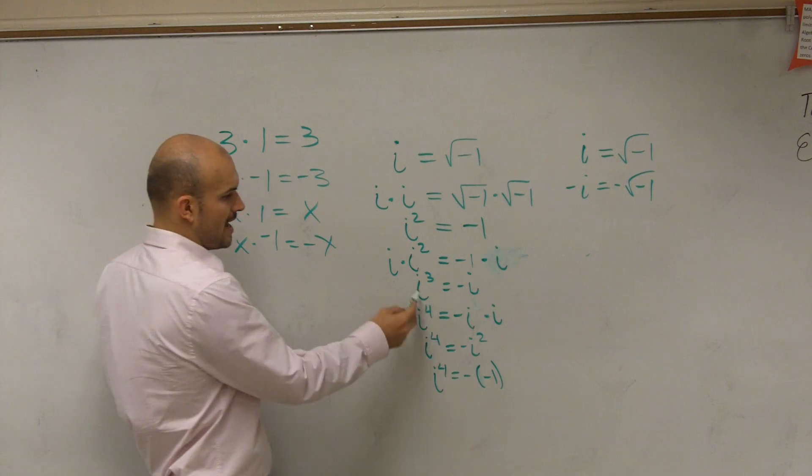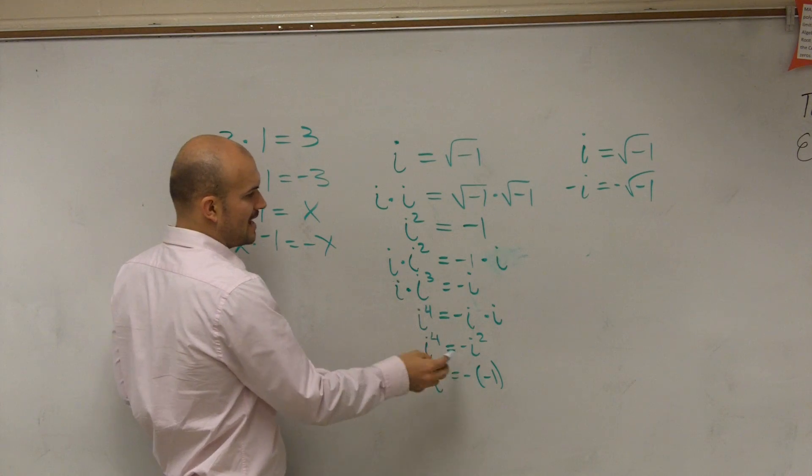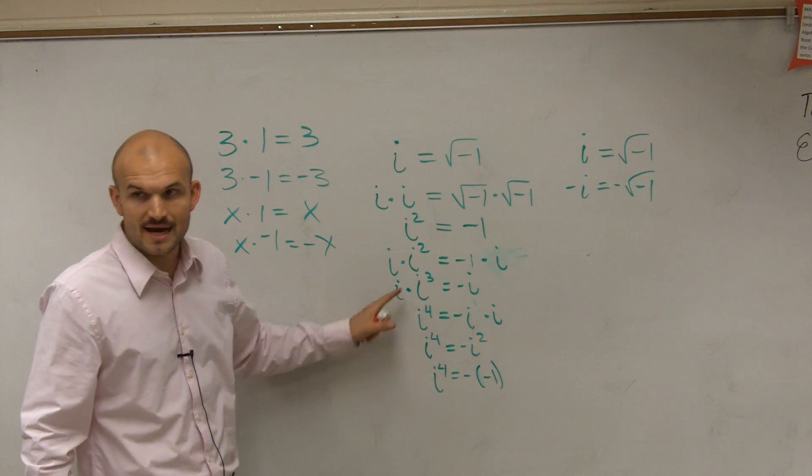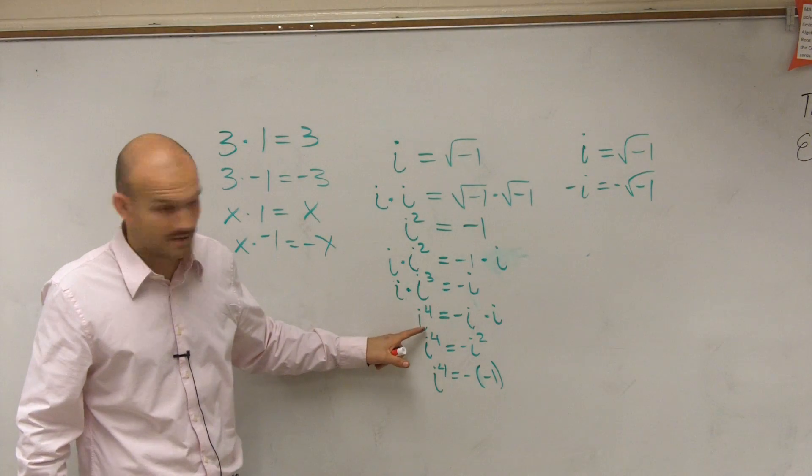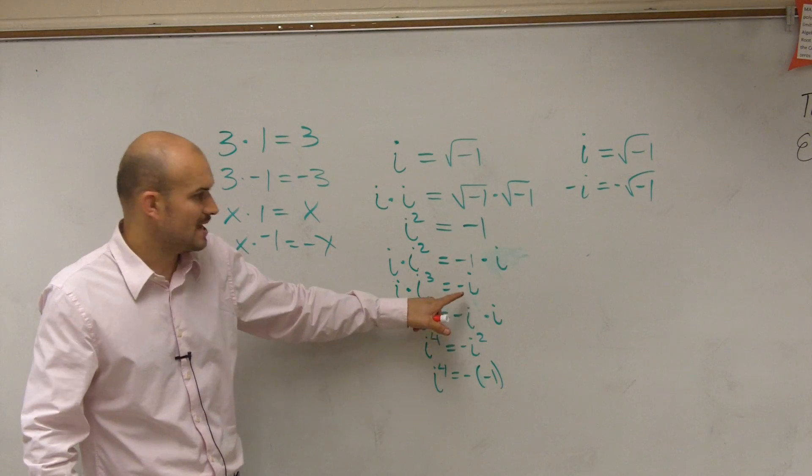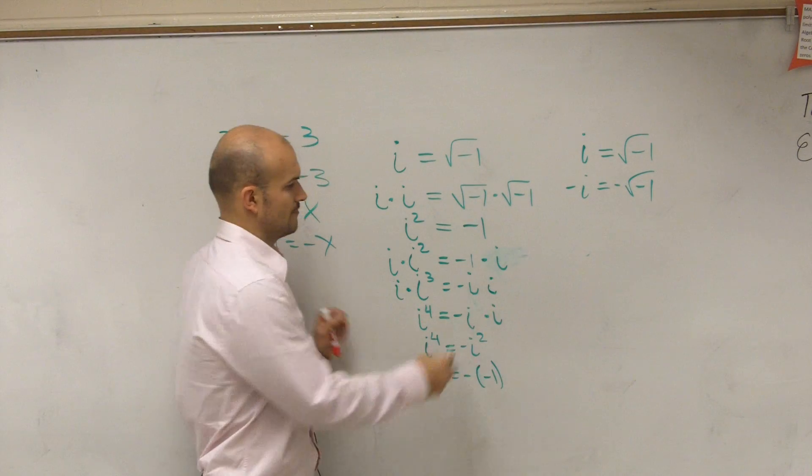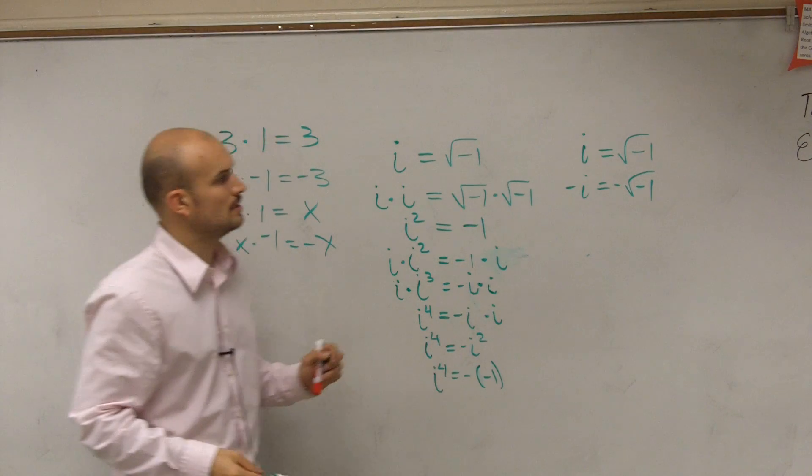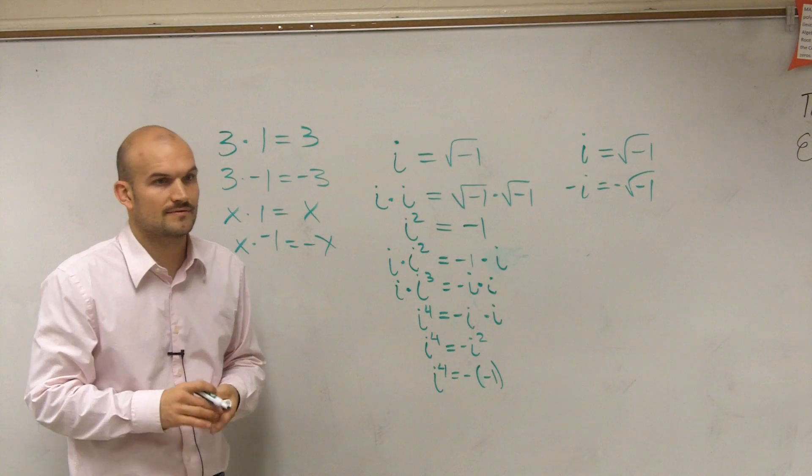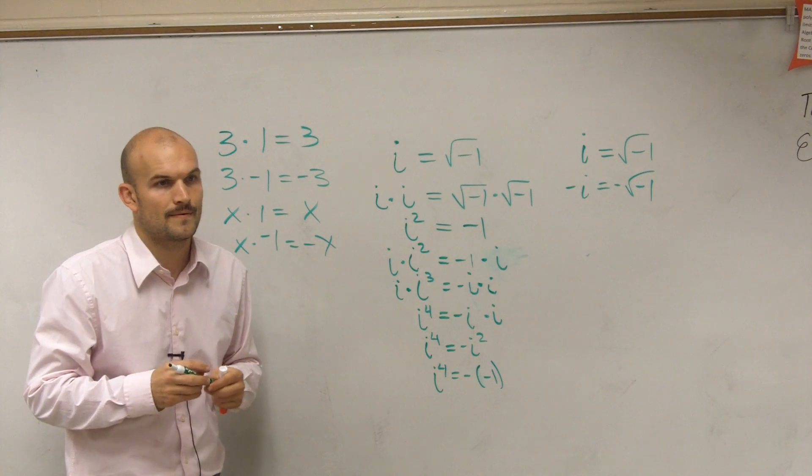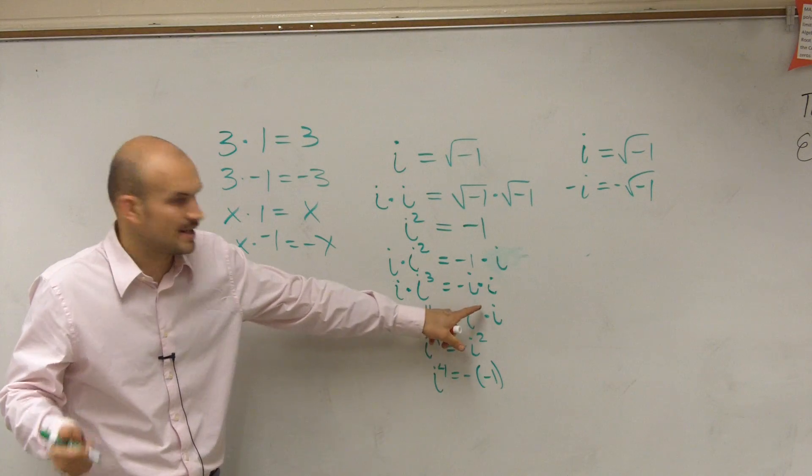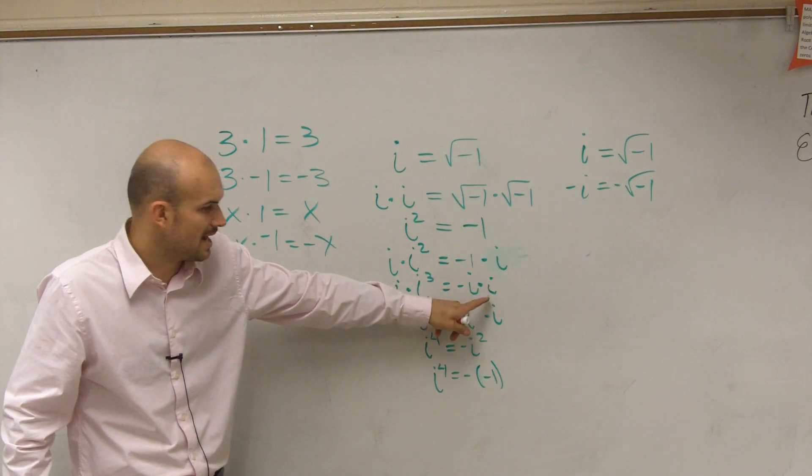Then I go to i to the fourth. So then I multiply by i again. i cubed times i is i to the fourth. So what happens when I multiply a negative i times i? What's the difference between negative i and i? One's negative, one's positive. So let's look at it. Negative i times i. That means you multiply on both sides.